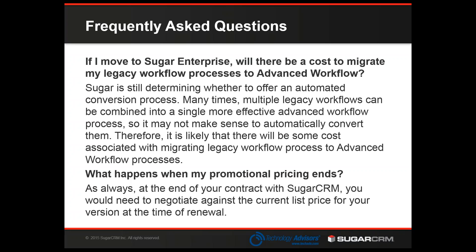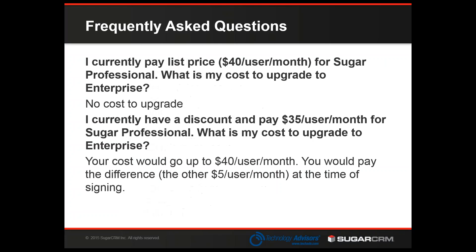Regarding this pricing promotion: you can lock in pricing for anywhere from one to five years. When that promotional pricing ends — same as the end of any other contract — you're going to negotiate what your new price for Sugar would be at that time, against whatever the current list price is. For example, if you currently pay list price of $40 per user per month for Sugar Professional, you have absolutely no cost to upgrade to Sugar Enterprise — it's the exact same $40. If you currently have a discount and are paying $35 per user per month, your cost would go up to $40 per user per month, and you'd pay the difference of $5 per user per month at the time of signing.